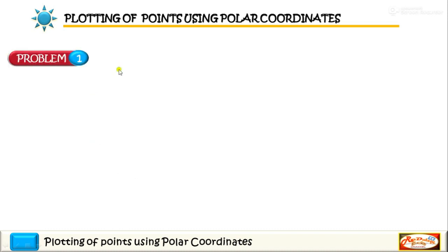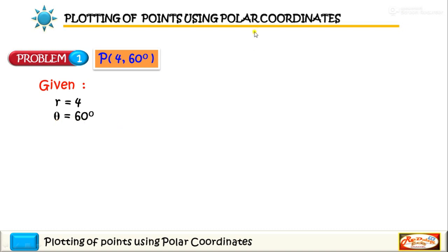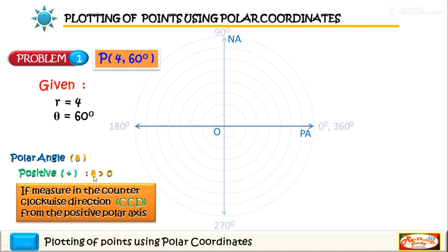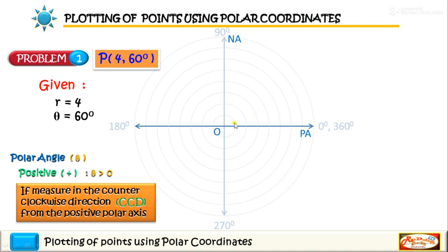We have point 1 to be plotted, having coordinates of r equal to 4 and the polar angle 60 degrees. So we have r equal to 4 and theta equal to 60 degrees. We will first draw the normal and the polar axis, then start plotting the 60-degree angle. Since that angle is positive and greater than 0, we will measure the 60-degree angle in a counterclockwise direction from the positive polar axis.